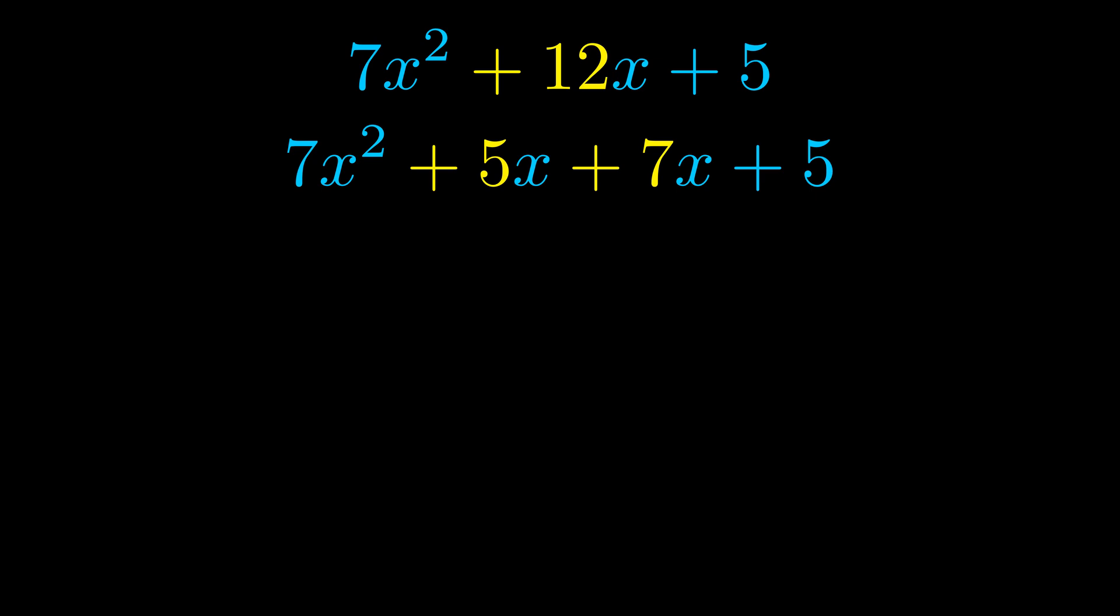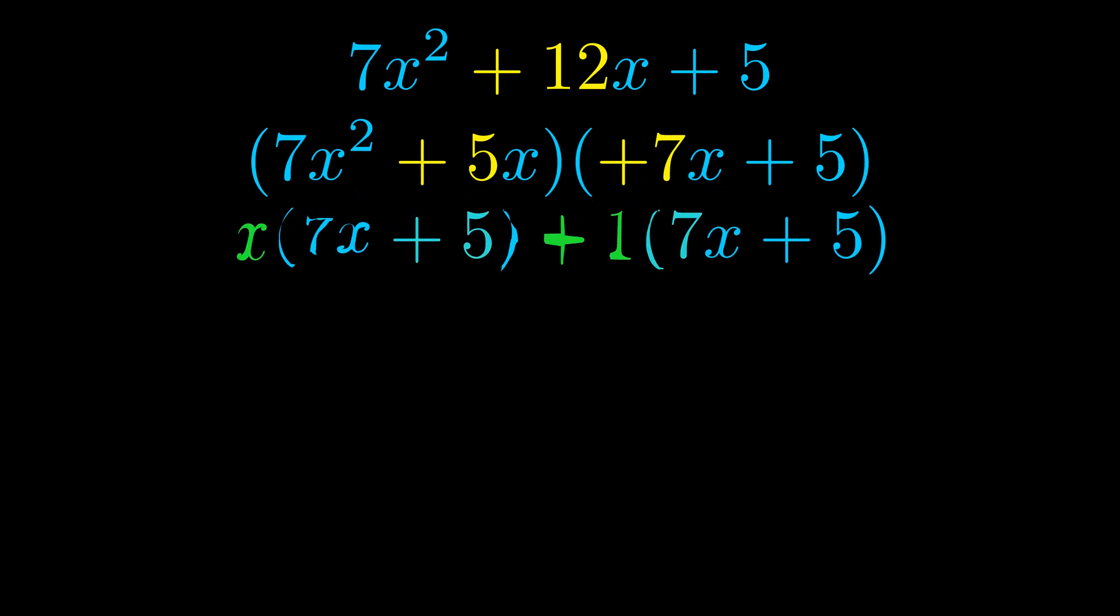Once we've done this, we go ahead and put parentheses around the first term and the last term. And we do that so that we can take the greatest common factor out of both terms. We can see the greatest common factor is now outside in green.